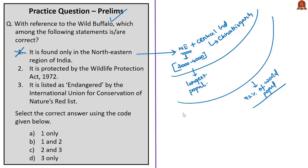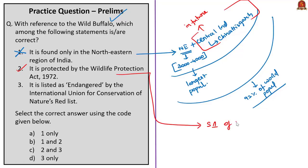If appropriate conservation measures are not taken to protect wild buffaloes in central India, they may become extinct there in future. The second statement: wild buffalo is protected by the Wildlife Protection Act of 1972 — correct, listed under Schedule I. The third statement: it is listed as Endangered by the IUCN Red List — correct. Approximately 2,500 mature individuals exist, with a decreasing population trend. Correct statements are two and three — answer is option C.